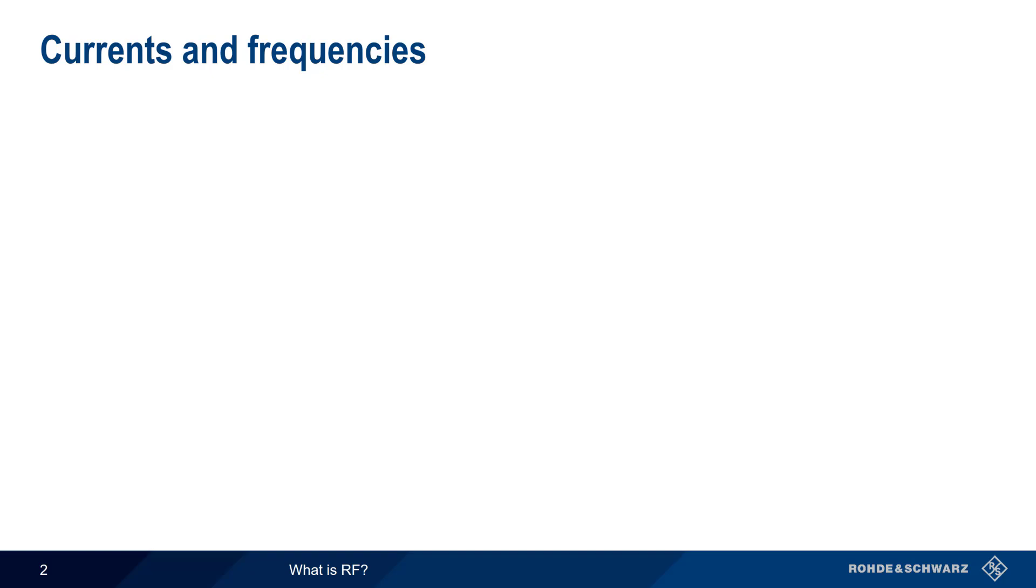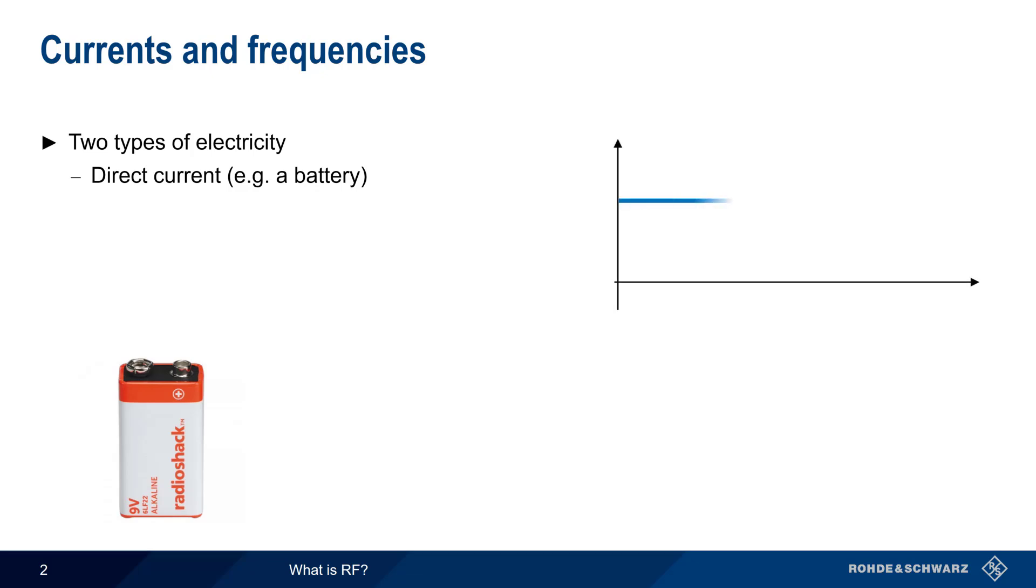To understand RF, we first need to talk about the two different types of electricity. The first of these is direct current, or DC. A common household battery is an example of a source of DC power. In DC, the amount of voltage or current produced typically remains constant over time. The second type is alternating current, or AC.